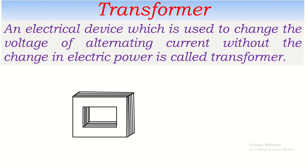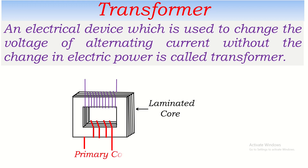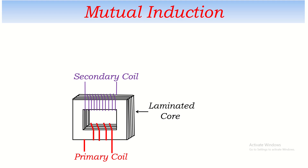A transformer consists of thin sheets of iron which are laminated — many sheets placed one over another, each insulated using paint or varnish. This is called the laminated core of the transformer. Two coils are used: the first coil through which AC is taken as input is called the primary coil, and the second through which AC is taken as output is called the secondary coil. This is the basic construction.